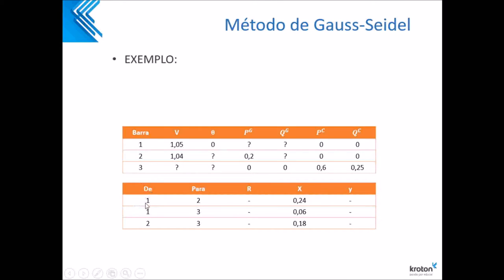Para ter um exemplo: da barra 1 para a barra 2, eu tenho esse valor X igual a 0,24. Da barra 1 para a barra 3, eu tenho 0,06. E da barra 2 para a barra 3, eu tenho 0,18. Esse é um exemplo bem prático para a gente chegar lá.